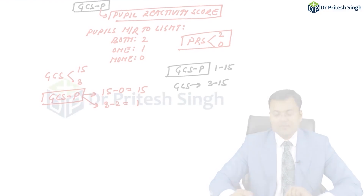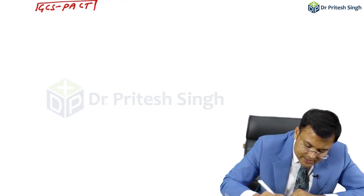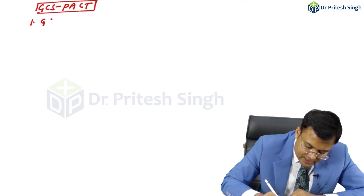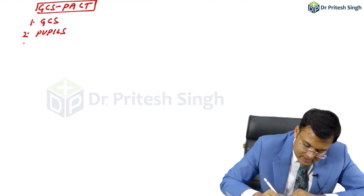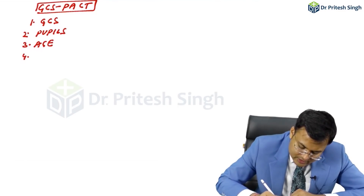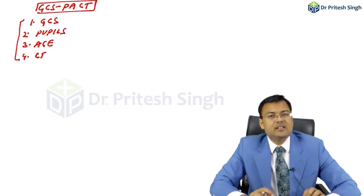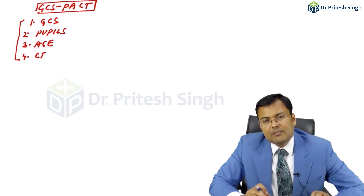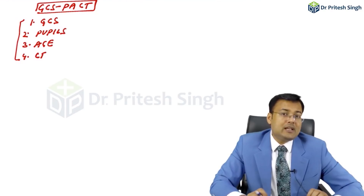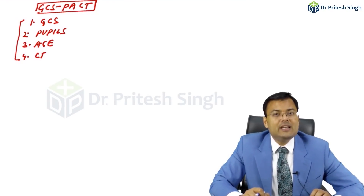Next is GCS-PACT. The components of GCS-PACT are: G — Glasgow Coma Scale, P — Pupils, A — Age, and C/T — CT scan. These are the 4 components of GCS-PACT. This is very important, and questions on this topic have been frequently asked in exams over the last two years.